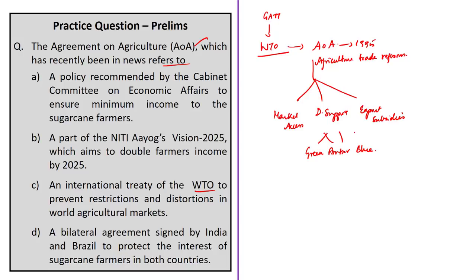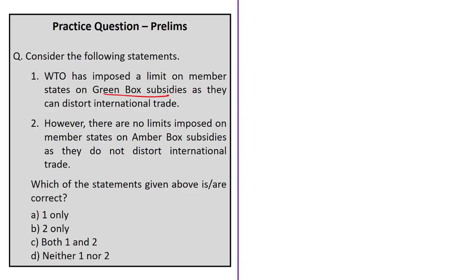The next question is on green box and amber box subsidies. Two statements are given: the first states that the WTO has imposed a limit on green box subsidies as they can distort international trade; the second states that there are no limits on amber box subsidies as they do not distort trade. Since green box subsidies do not distort trade and amber box subsidies do distort trade, both statements are logically inverted and therefore wrong. The correct answer is option D — neither statement one nor two is correct.